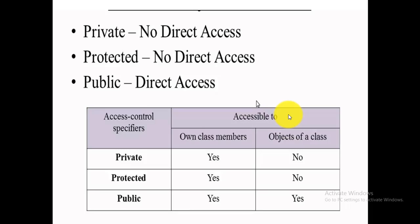Can class members access private members? Yes. Can an object of a class access private data members? No, because the object is created outside the class. For protected members, class members can access them — yes — but an object of the class cannot directly. Public members can be accessed by objects and by sub-classes. Private has no direct external access, protected has no direct access but works through inheritance, and public has direct access. Thank you very much.